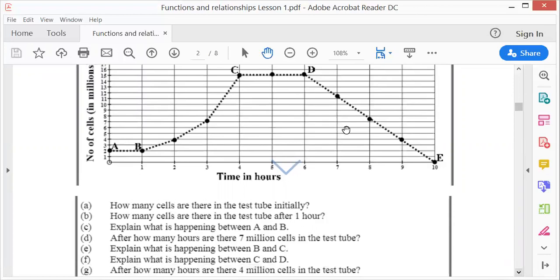After how many hours are there 4 million cells in the test tube? So, 4 million, there you are. Four million, go up and down, after two hours.